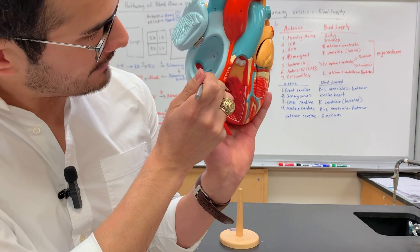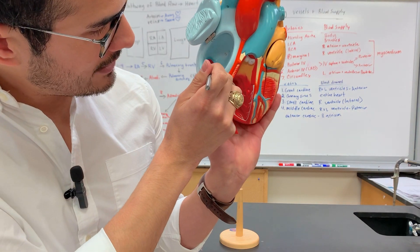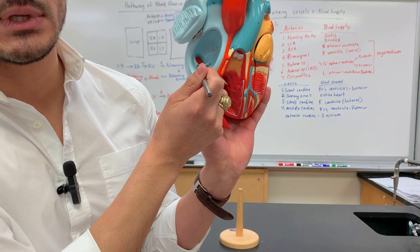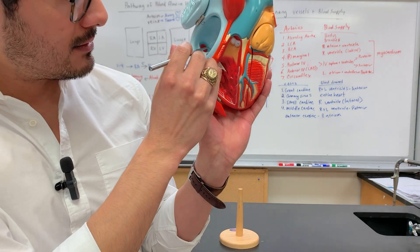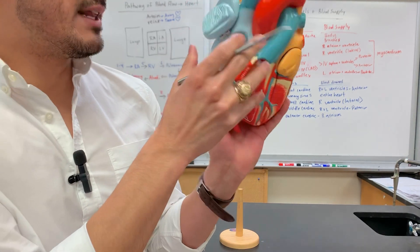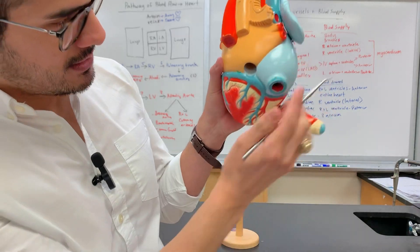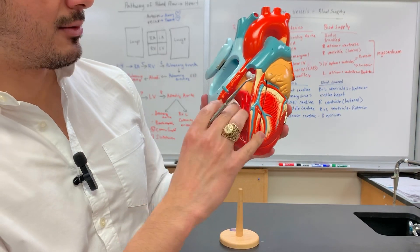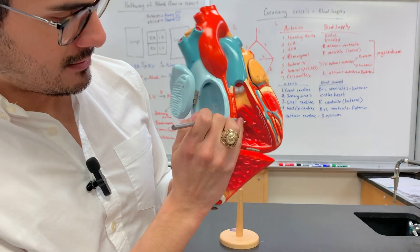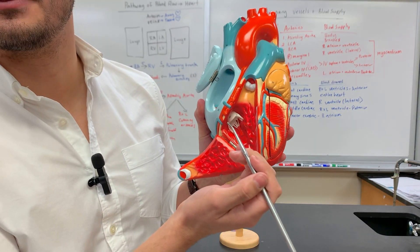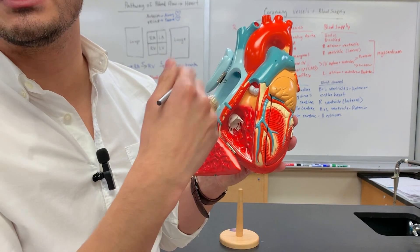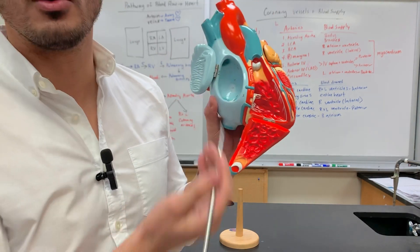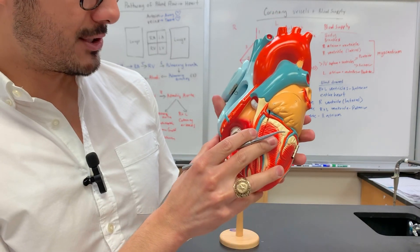That's the opening for the inferior vena cava and then that's the opening for the coronary sinus. This is the valve for the coronary sinus and then that's the valve for the inferior vena cava. The coronary sinus is on the back side — that's what's emptying into the right atrium. We're getting all this deoxygenated blood from the top, from the bottom, and from the coronary sinus emptying into that region.